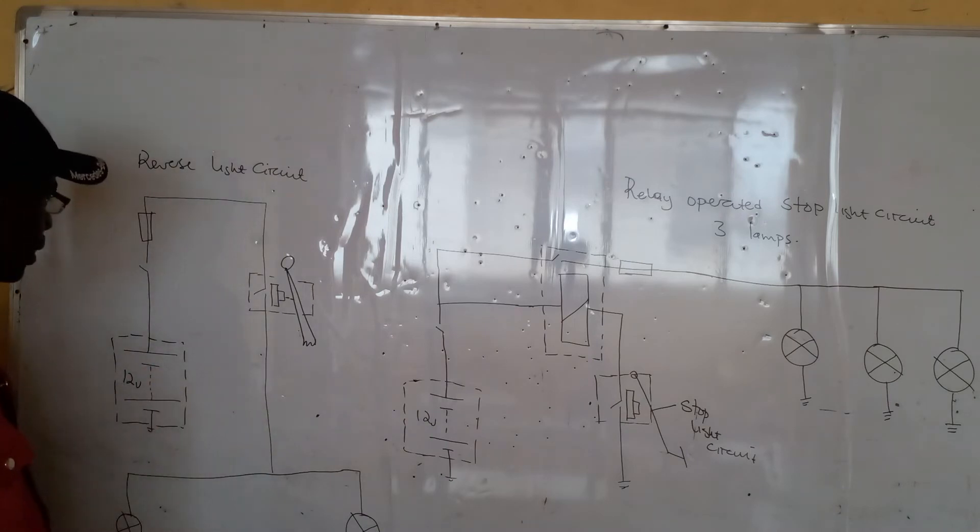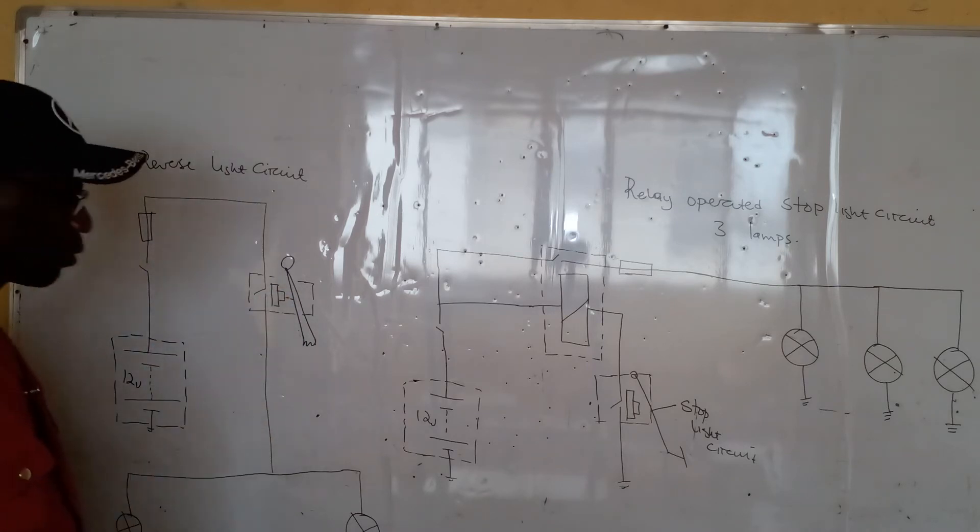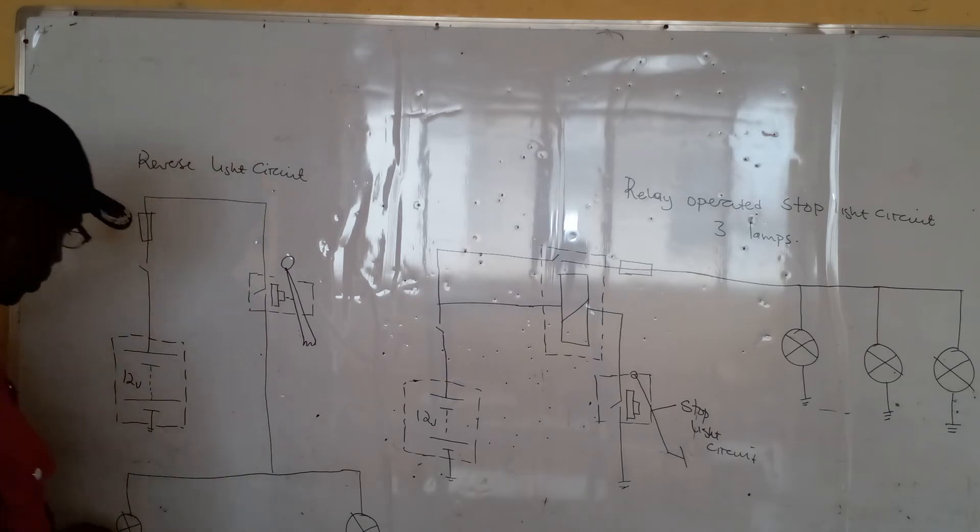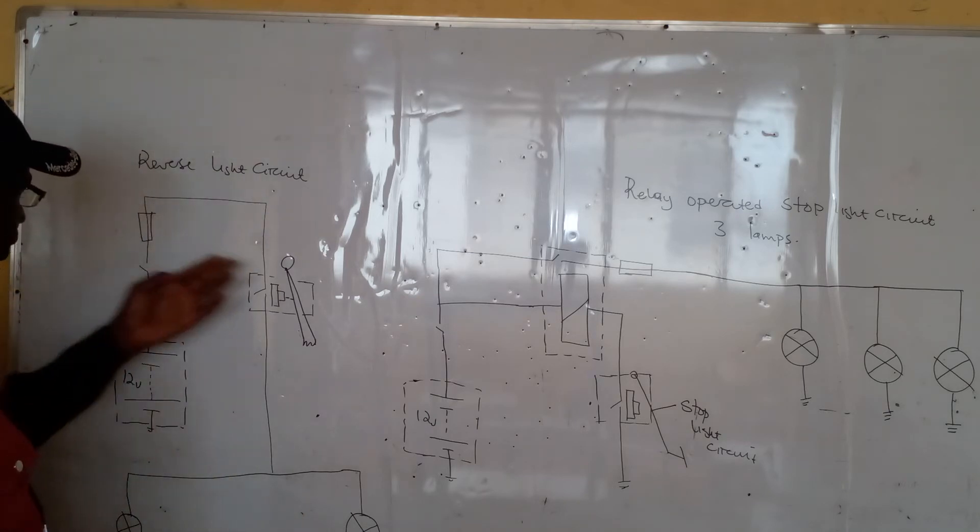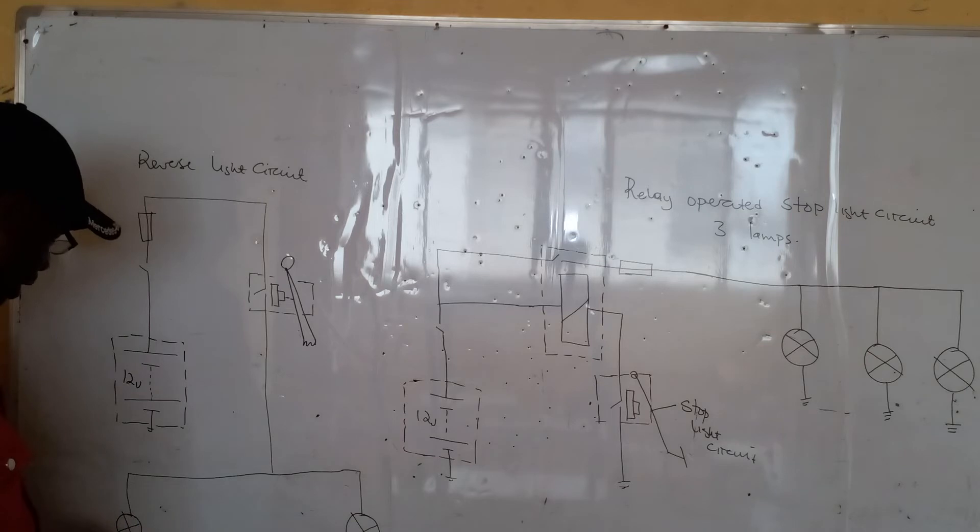When it comes to the reverse light circuit, there are things which are likely to go wrong, which are probably a battery is flat, it could be a blown fuse, it could be failure of the switch. All these components will fail to an extent when these lamps may not come on,